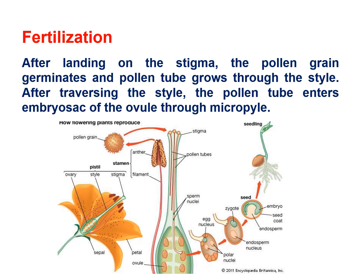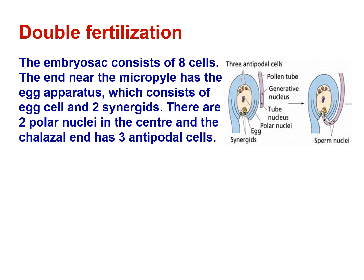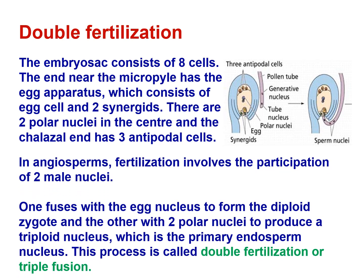Fertilization: After landing on the stigma, the pollen grain germinates and the pollen tube grows through the style. The pollen tube enters the embryo sac of the ovule through the micropyle. Double Fertilization: The embryo sac consists of eight cells. The egg apparatus near the micropyle consists of the egg cell and two synergids, two polar nuclei are in the center, and three antipodal cells are at the chalazal end. In angiosperms, two male nuclei participate in fertilization: one fuses with the egg nucleus to form the diploid zygote, and the other fuses with the two polar nuclei to produce a triploid primary endosperm nucleus. This process is called double fertilization or triple fusion.